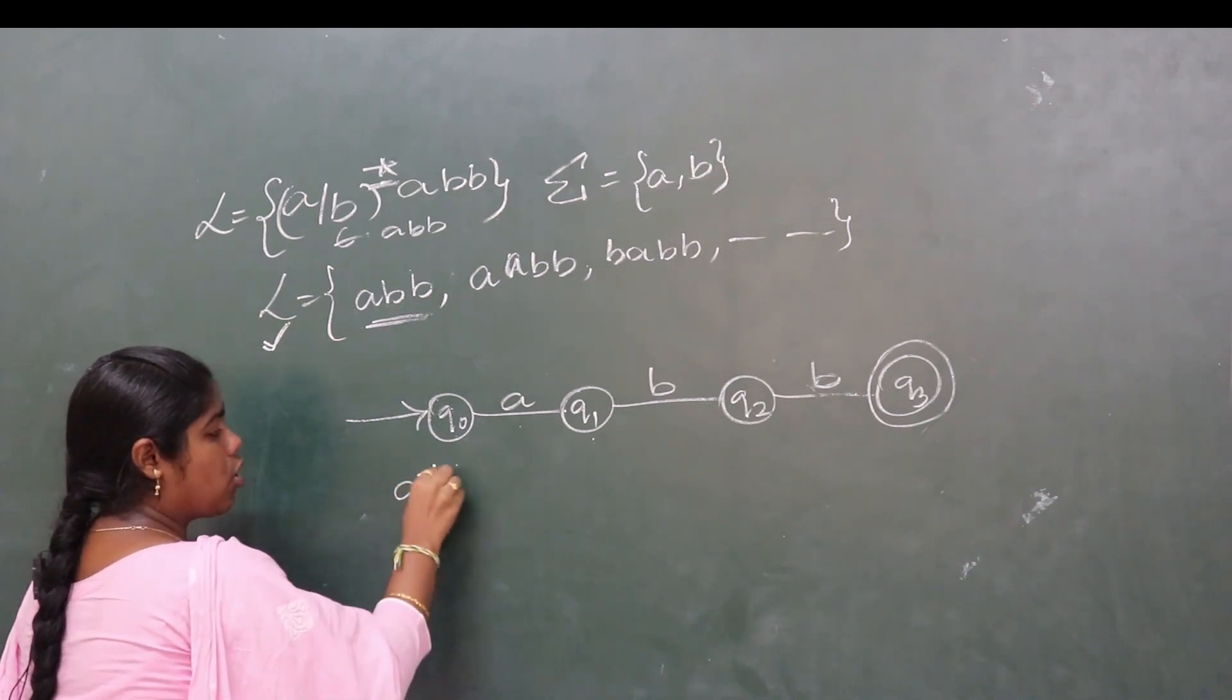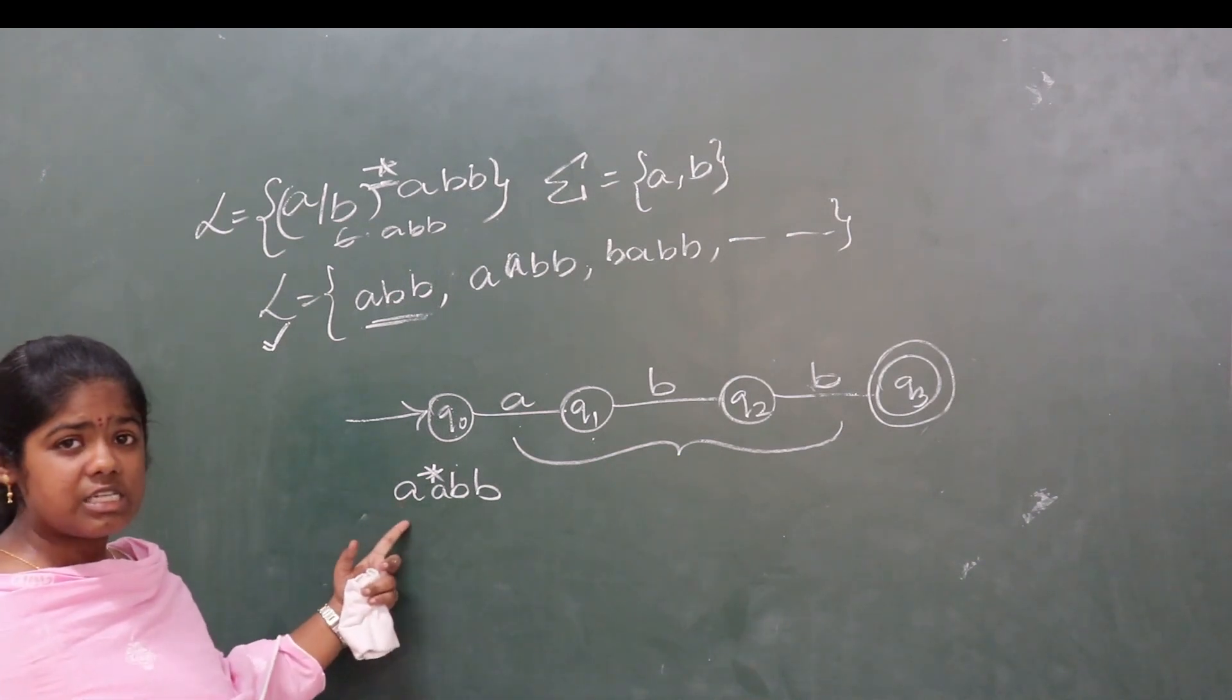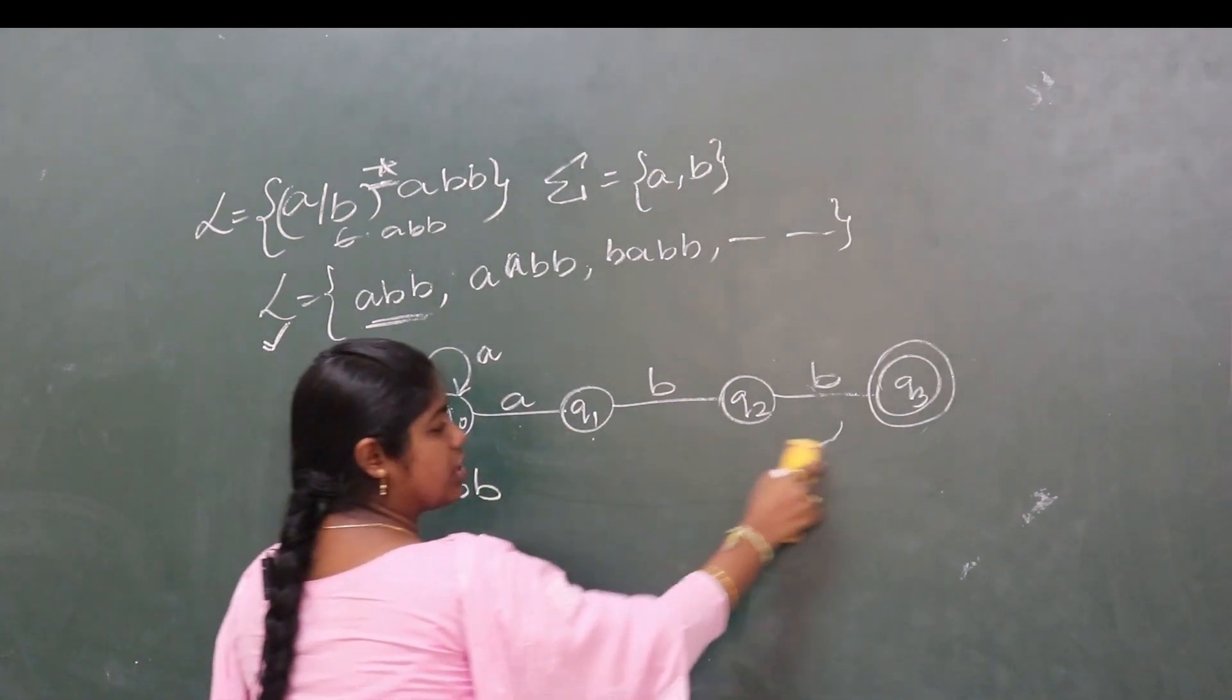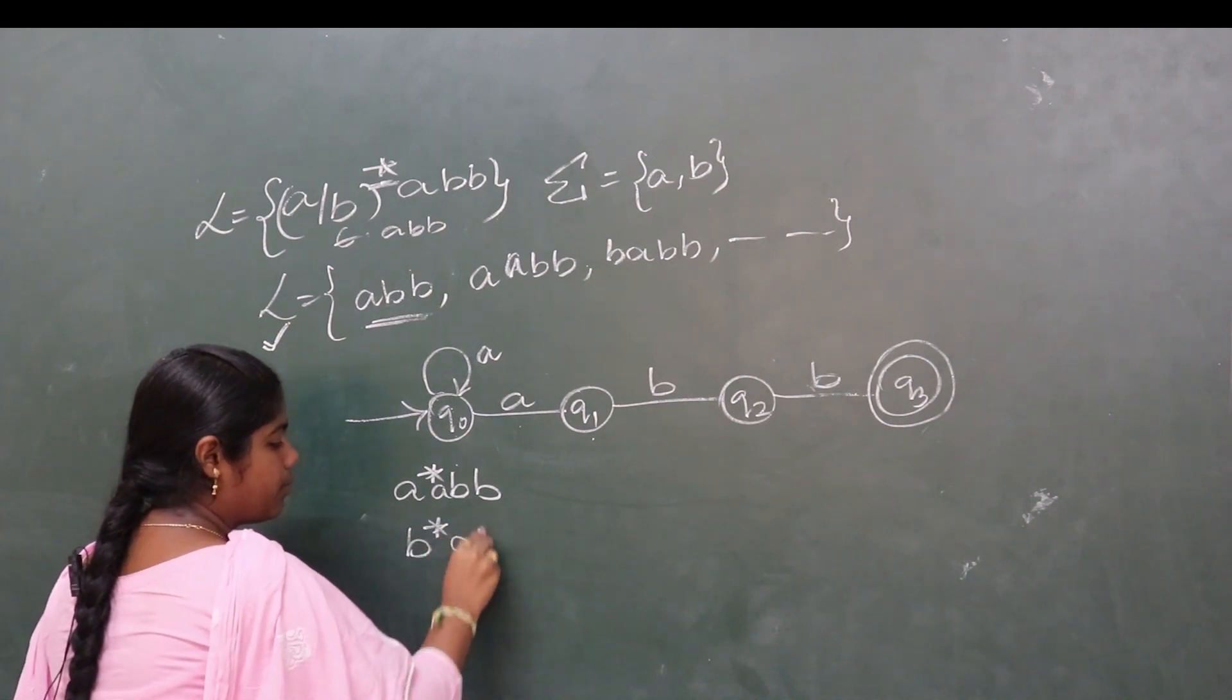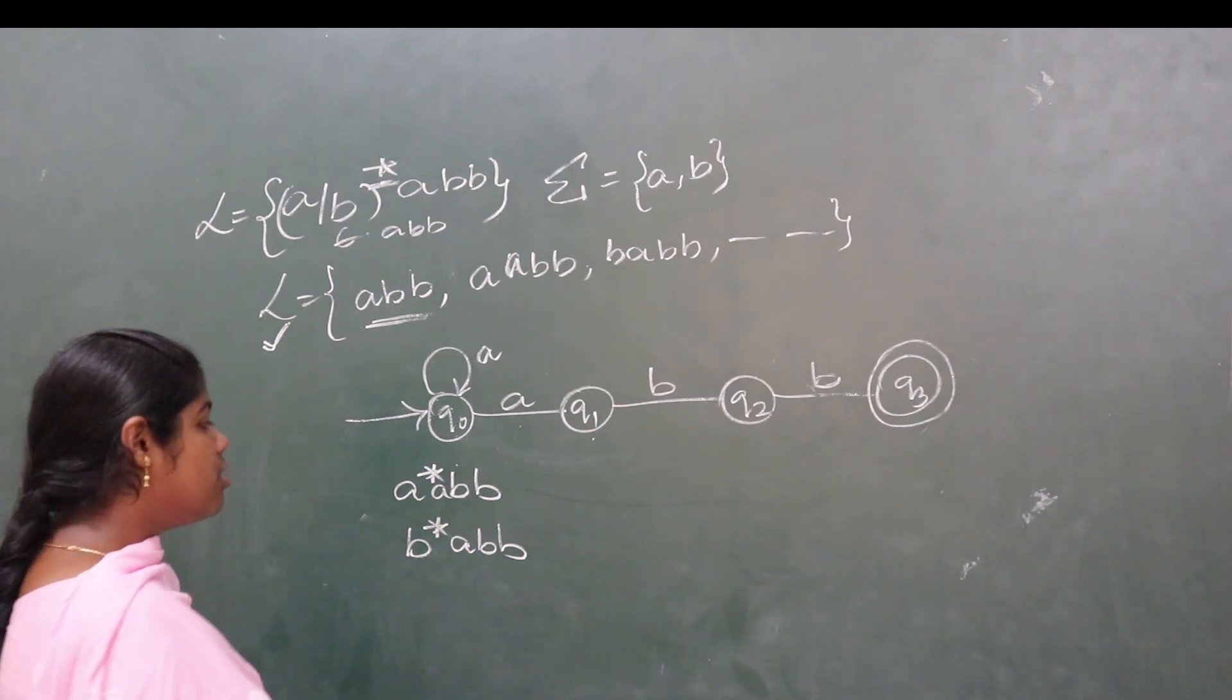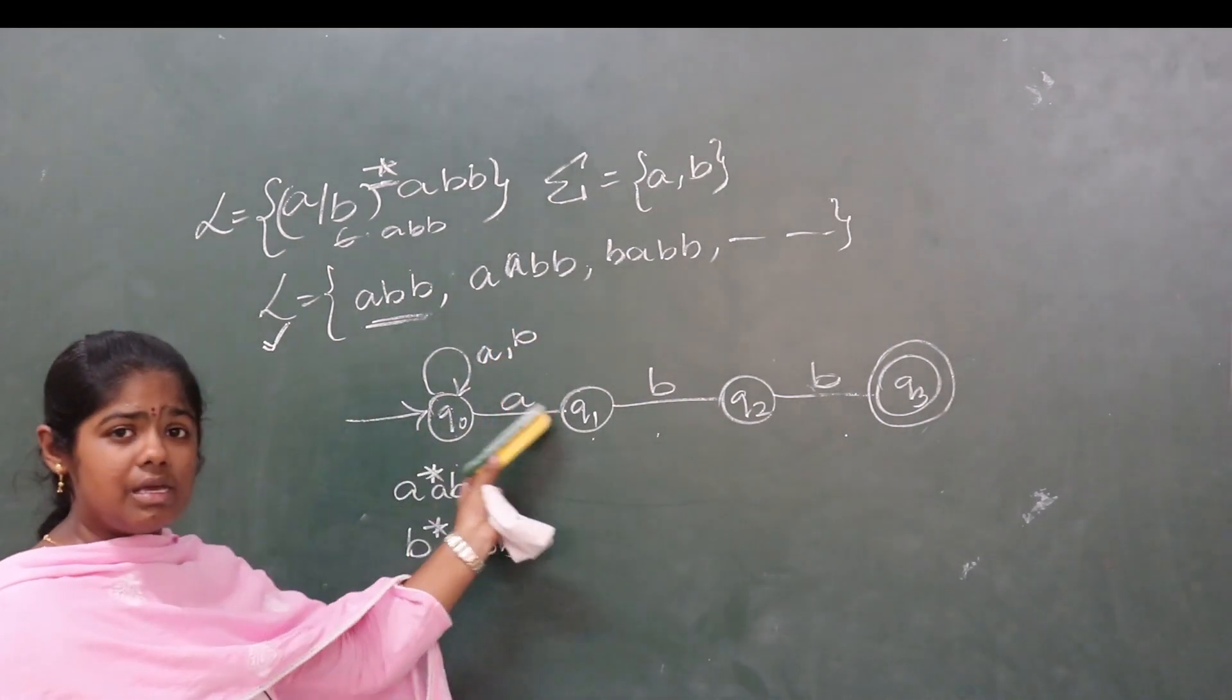Consider the string a*abb, which has Kleene closure of a and ends with abb. Since a can repeat any number of times, add a self-loop on a at Q0. Similarly, for b*abb, add a self-loop on b at Q0. The input transitions remain the same.